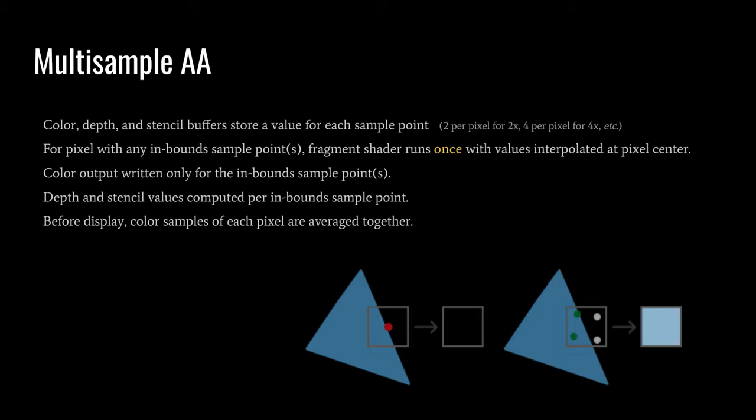And so, for interior pixels of a triangle, all four sample points will be inbounds, but then for pixels on the edge, only one or two or three will be inbounds. And if you notice in the diagram here that the grid of four pixels is slightly rotated, that's usually how the sampling points are arranged, because it effectively cuts across the grid of our pixels, and so it's going to give us a slightly more effective anti-aliasing.